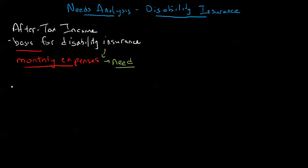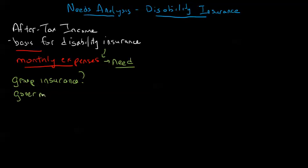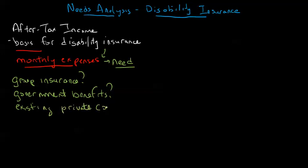So where does it get complicated? We do have a few sources of complexity here, thankfully not that many. We would look at things like: is there any group insurance in place? Do we have some government benefit programs that we have to take into account? And is there some existing disability insurance — existing private coverage — already in place? These things can all make our needs analysis potentially a little bit more challenging, but they're all manageable.